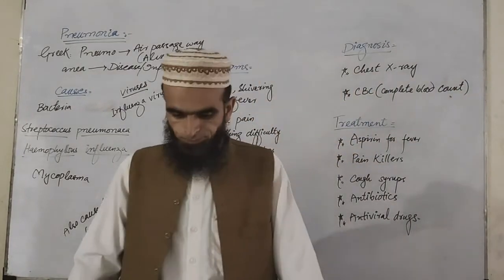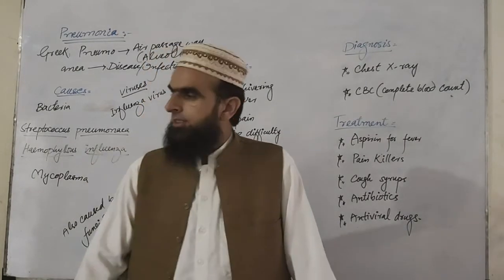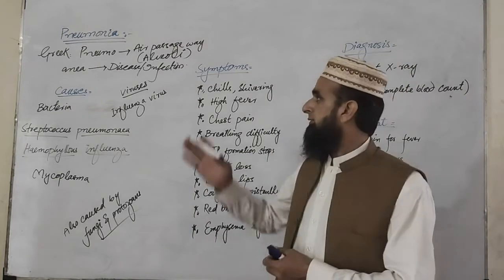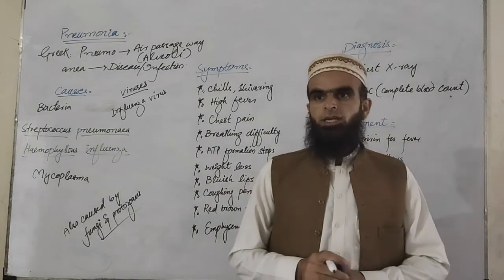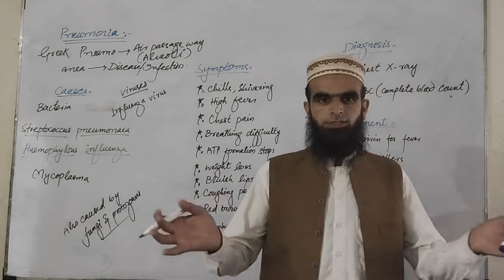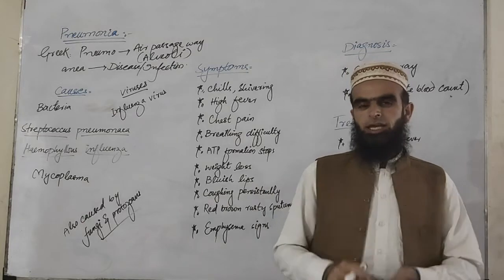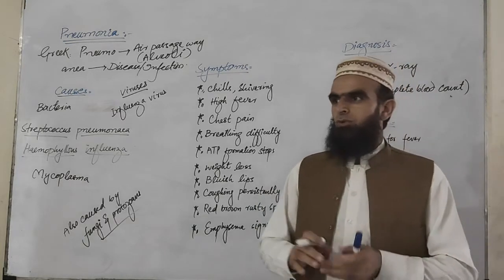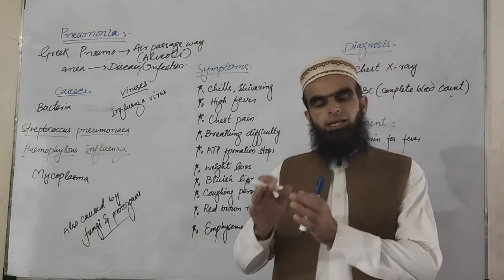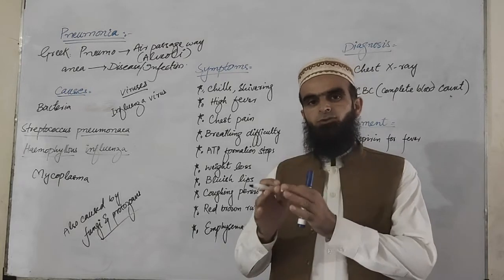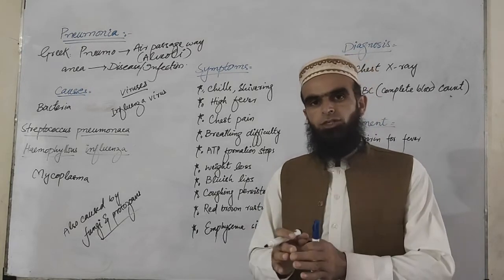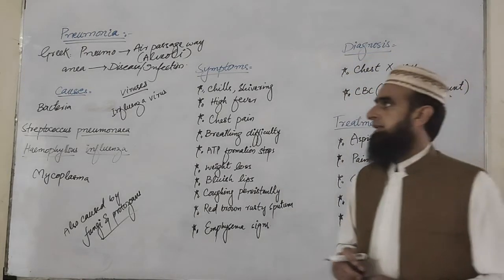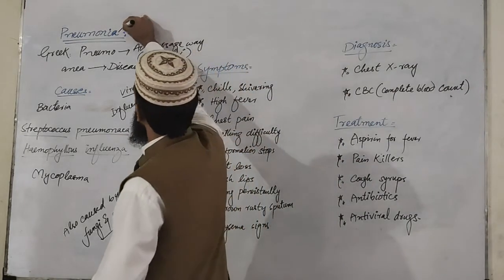Basically what happens in this disease is that the alveolar walls are usually attacked by different kinds of germs. Due to this infection of the alveolar walls, some fluids and pus are released and accumulated inside the alveoli. So whenever the alveoli are filled with accumulated fluids and pus, inflammation of the alveolar walls is caused, and that inflammation results in pneumonia.